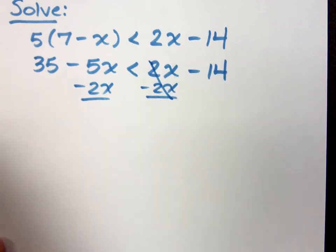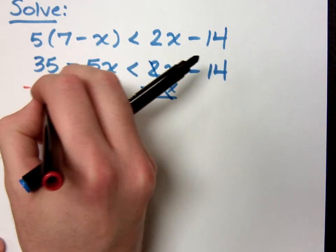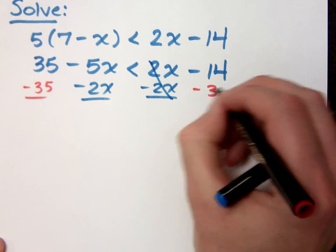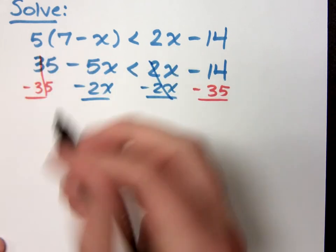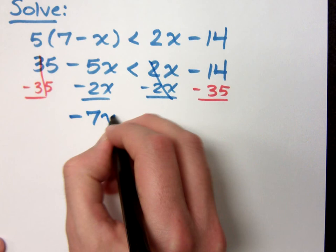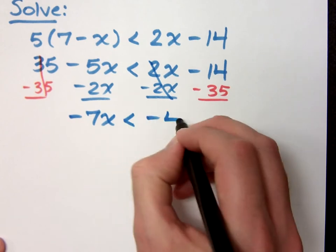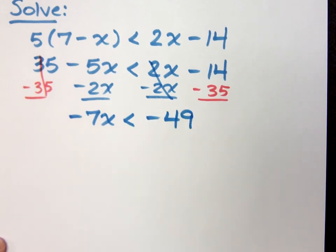So those cancel. I move the 35 to the right side. So now I have negative 7x is less than negative 49.